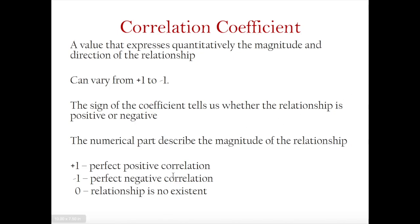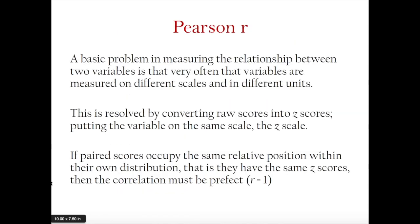Perfect positive correlation is positive 1, and perfect negative correlation is negative 1. Now for Pearson R, what exactly happens behind the scenes when we compute a Pearson R correlation coefficient?